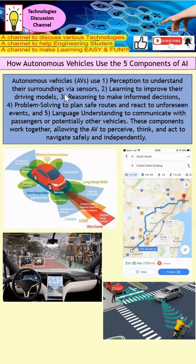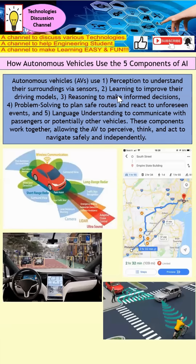Next is problem solving, which is basically to plan a route and react to unforeseen events. For example, when we plan to travel from point A to point B under human driving, we plan how to drive that route. For an AV, imagine this as a Google Maps scenario — there may be many possible routes for the AV to travel from point A to point B, and it will probably pick up the fastest route. This is how they approach problem solving.